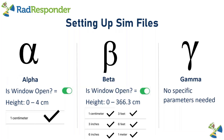As a quick cheat sheet: for alpha, you must have your window open and the height must be zero to four centimeters — so select the one centimeter option to receive a value. For beta, your window must be open, and any height within zero to 366 centimeters will yield a simulated value — one centimeter, three inches, six inches, three feet, six feet, or one meter will all work. For gamma, the window does not have to be open and no specific parameters are needed to receive a value.